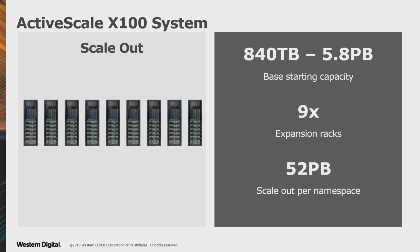The X100 can actually sustain a lot more IO when you scale out the P100, but the X100 is a lot more dense. So there are clearly different use cases for each. The X100 will scale up to nine units in a single namespace — that doesn't mean you can't have multiple namespaces with more petabytes. It comes down to how big you want your failure domains to be. 50 petabytes is a pretty big failure domain.